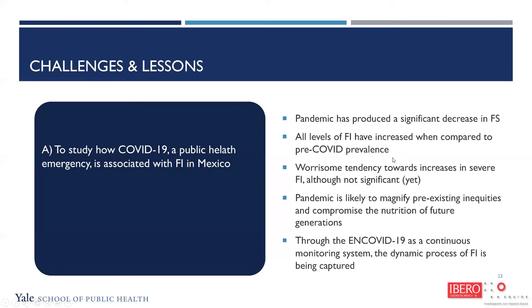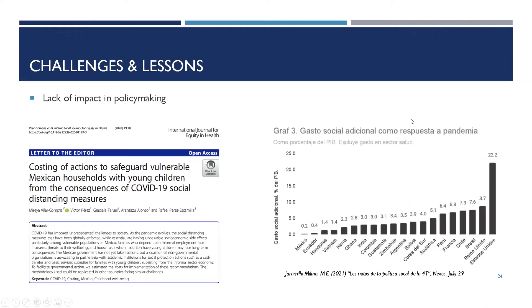In terms of the association between the pandemic and the emergency, the pandemic has produced significant decreases in food security and increases in food insecurity through almost all severity levels — the moderate one still has a pattern we need to understand. I think the tendency towards increases in severe food insecurity throughout the pandemic is really worrisome, although not yet significant. The pandemic is likely to magnify pre-existing inequities in Mexico, as we've seen in other countries. Through ENCOVID as a continuous monitoring system, we are seeing the dynamic process of food insecurity — how you move from food security to severe food insecurity — and now with this constant tracking, we are actually capturing the phenomenon as a dynamic process.